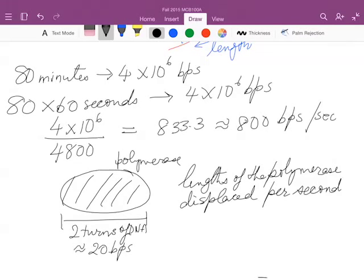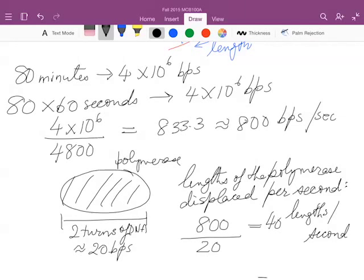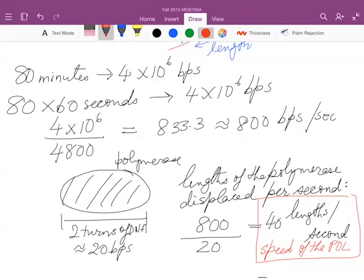So to compute this quantity, we look at the fact that it moves 800 base pairs per second, and we divide that by the number of base pairs in the length, which is 20, which gives us the number 40. And that is the speed of the polymerase in terms of lengths per second. So that's the first key result, and we'll just circle that and say that that's the speed of the polymerase, which I'll write as Pol.